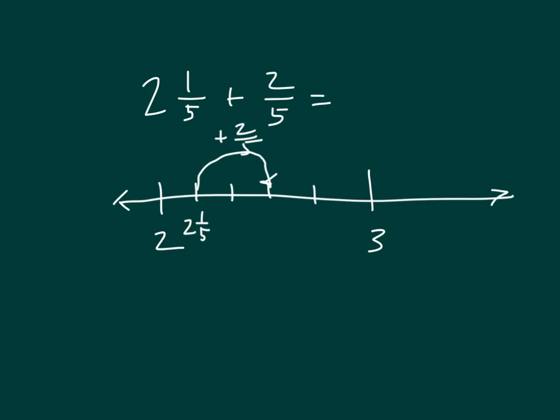Notice how the ones stay the same. So we're still at 2 here. And then we simply added the fractional part together there. 1 fifth plus 2 fifths does equal 3 fifths. And so we had 2 and 3 fifths right here on that number line. So again, it was 1 fifth plus 2 fifths is 3 fifths. And then the 2. So we have 2 and 3 fifths.